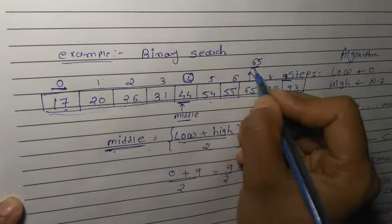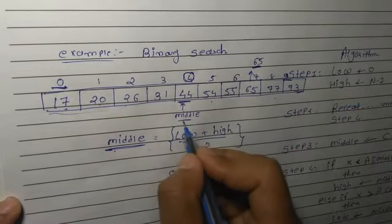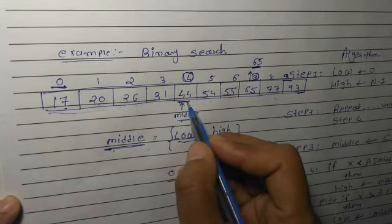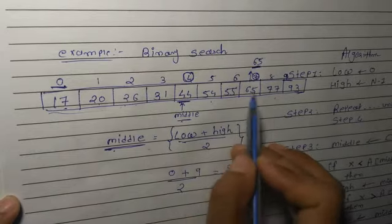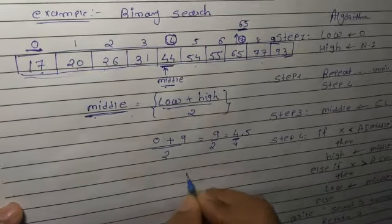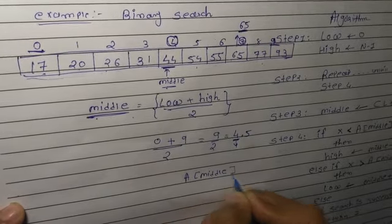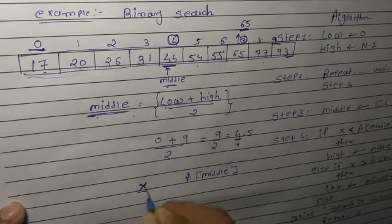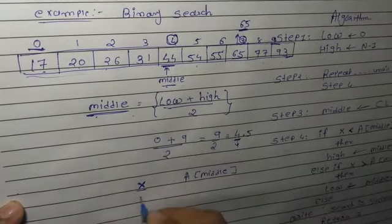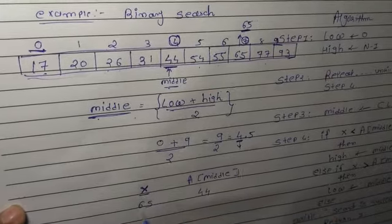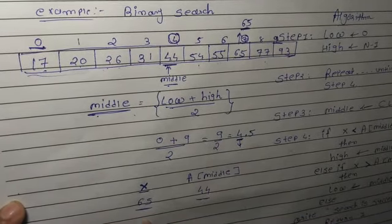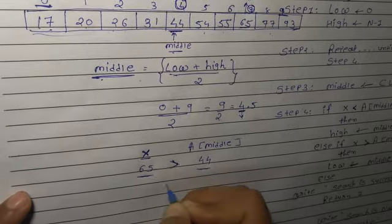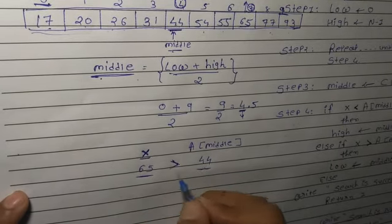Now I need data 65, and the middle found is 44. Data 65 is at position 7, and the middle portion gives 44. Now we compare: A[middle] versus x (the data we want). Here x is 65 and middle is 44. Which is greater between 65 and 44? Of course 65. So we can use the operator: 65 greater than 44, meaning 65 has a larger value than 44.